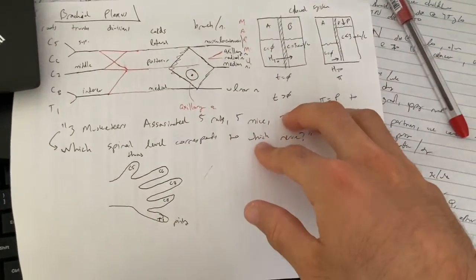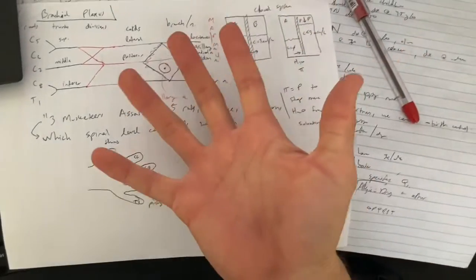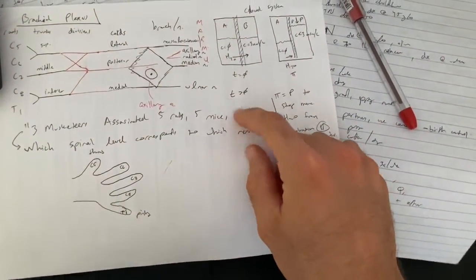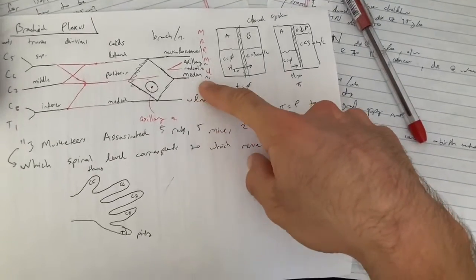Then you also have the five mice. Again, same thing. All five spinal levels will correspond to the median nerve.